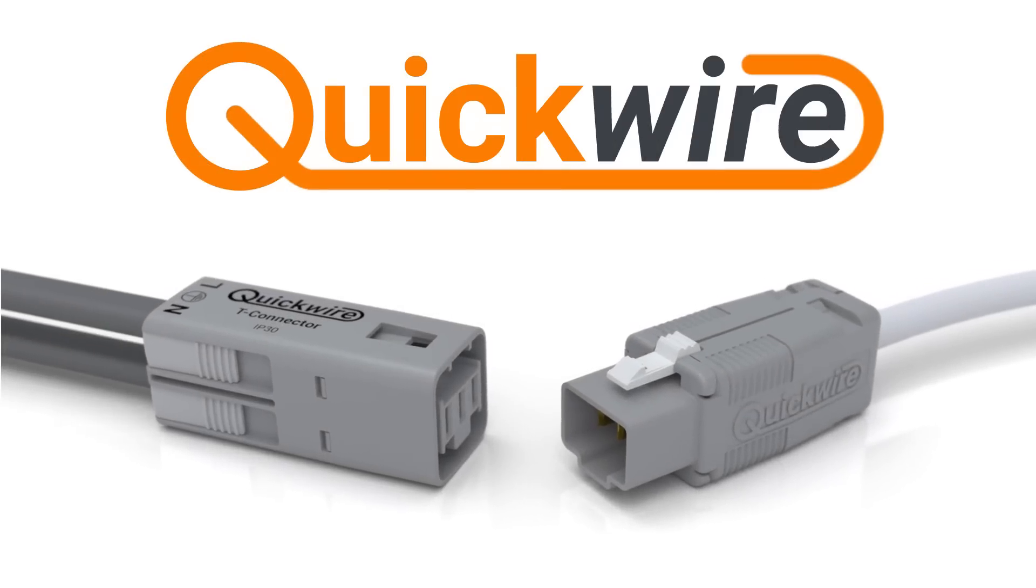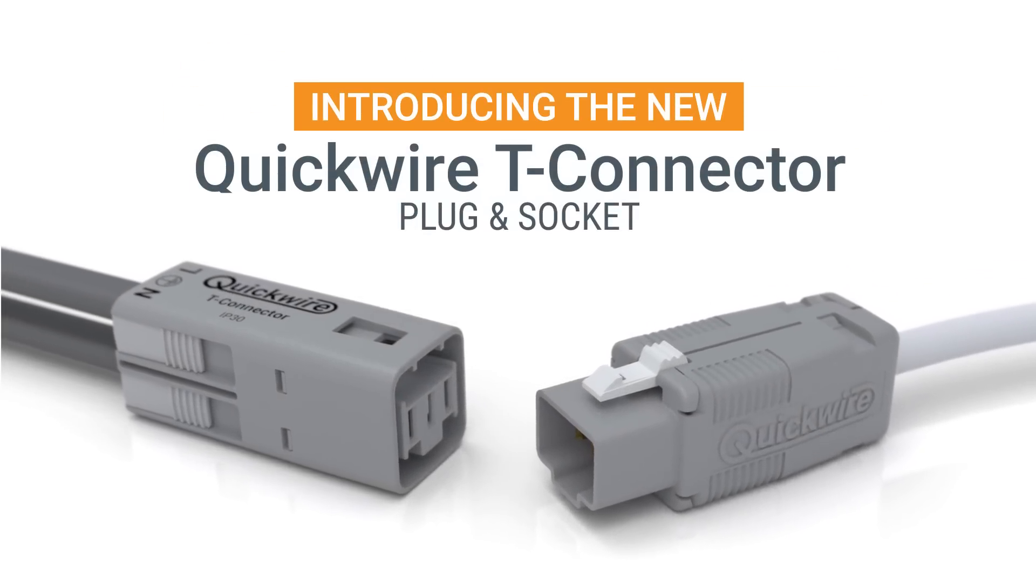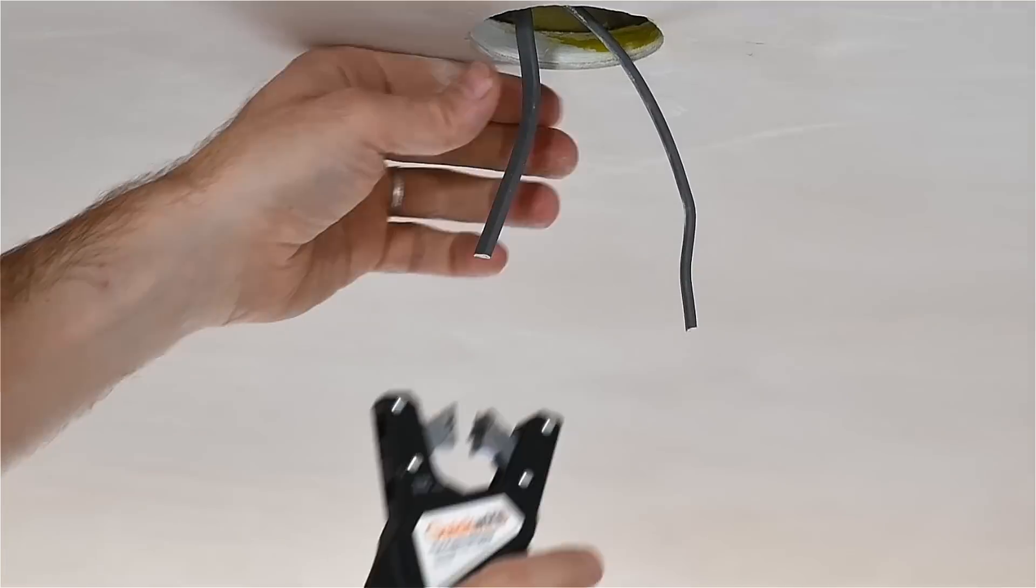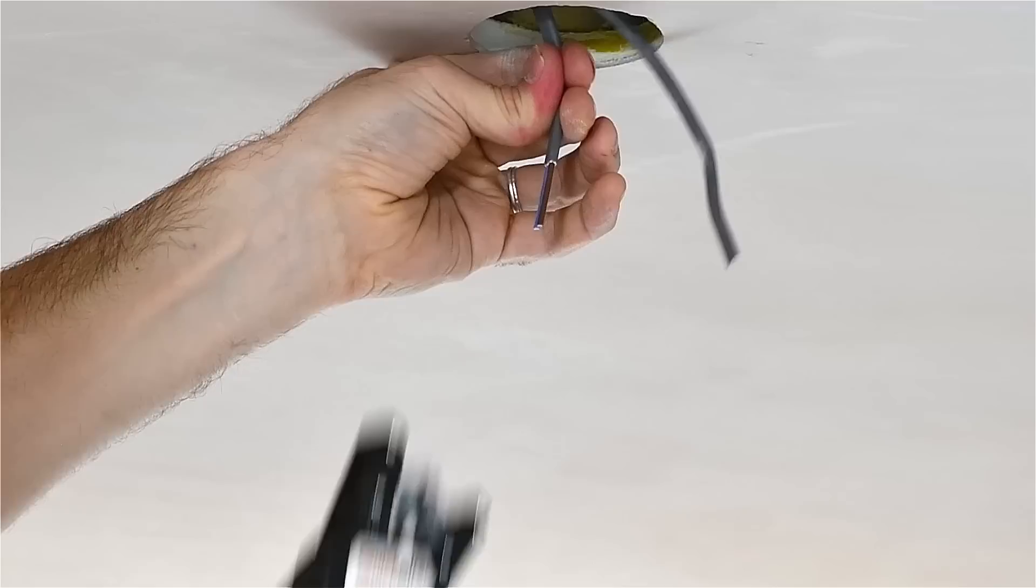Our pluggable T-Connector offers the same dramatic time savings as all QuickWire junction boxes. First, strip your twin-and-earth cable.